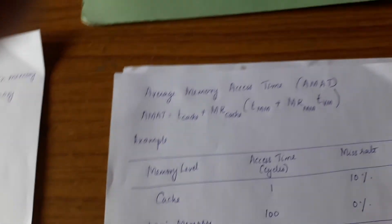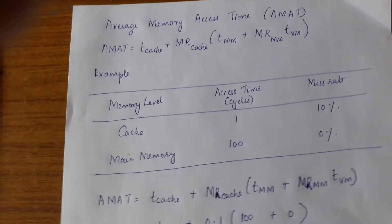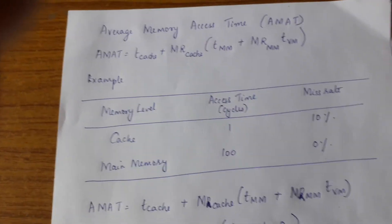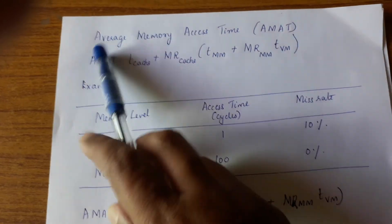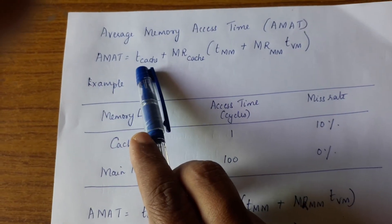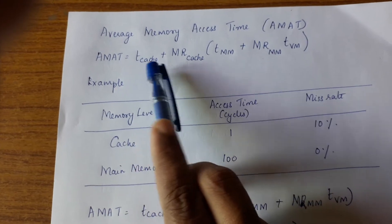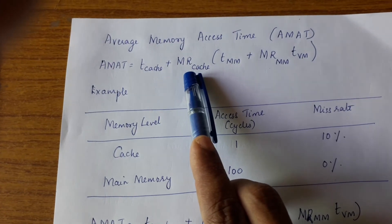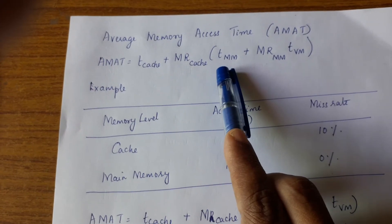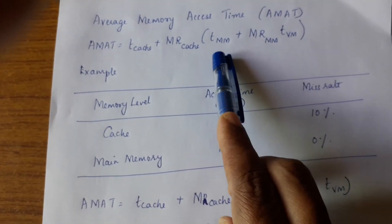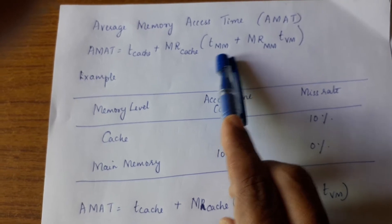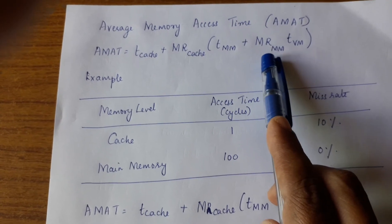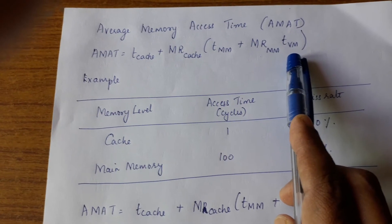Another parameter that can be used is called the average memory access time (AMAT). This tells us if we are using the right combination of cache memory, main memory, and virtual memory. AMAT is equal to T_cache plus the miss rate of the cache multiplied by T_main memory, plus the miss rate of the main memory multiplied by the time taken to access the virtual memory.